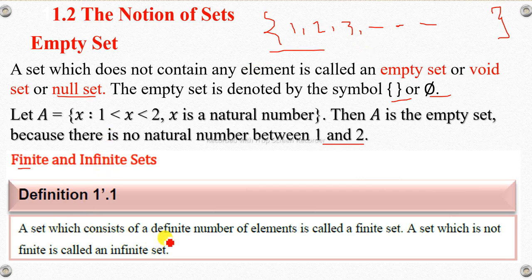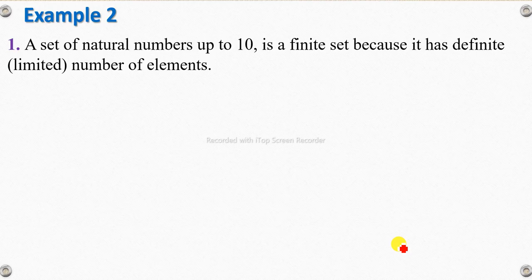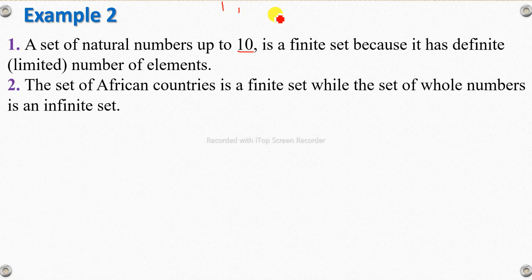A set which consists of a definite number of elements is called a finite set. A set which is not a finite set is called an infinite set. A set of natural number of elements is a finite set because it has a definite number of elements. A natural number set is called a finite set.